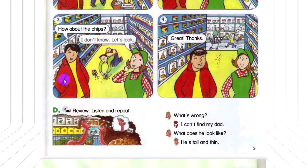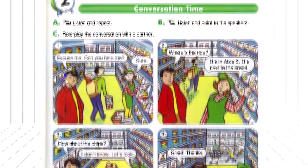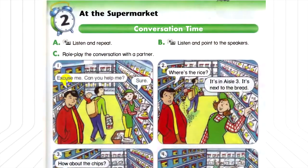Number 1. Excuse me, can you help me? Sure. Number 2. Where's the rice? It's in aisle 3. It's next to the bread. Number 3. How about the chips? I don't know. Let's look. Number 4. Great, thanks.